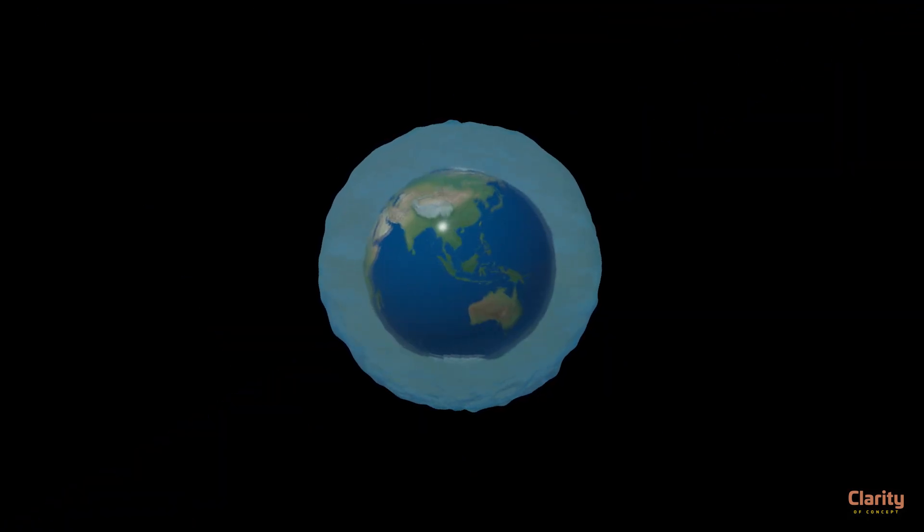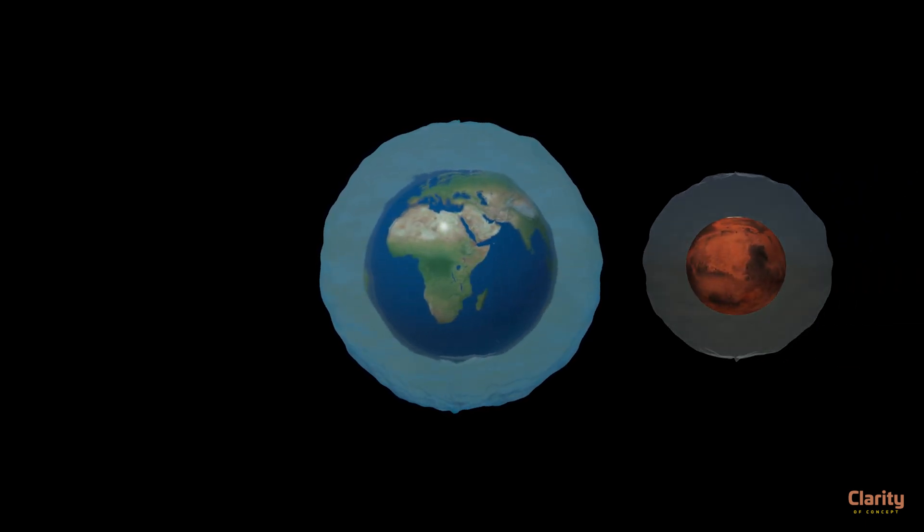Let us study atmospheric layers in this video. Earth has atmosphere around it. That means it has retained a mixture of gases around it because of gravity. If Earth's gravitation was weak, Earth would have lost these gases and there would have been no atmosphere like it has happened on Mars.